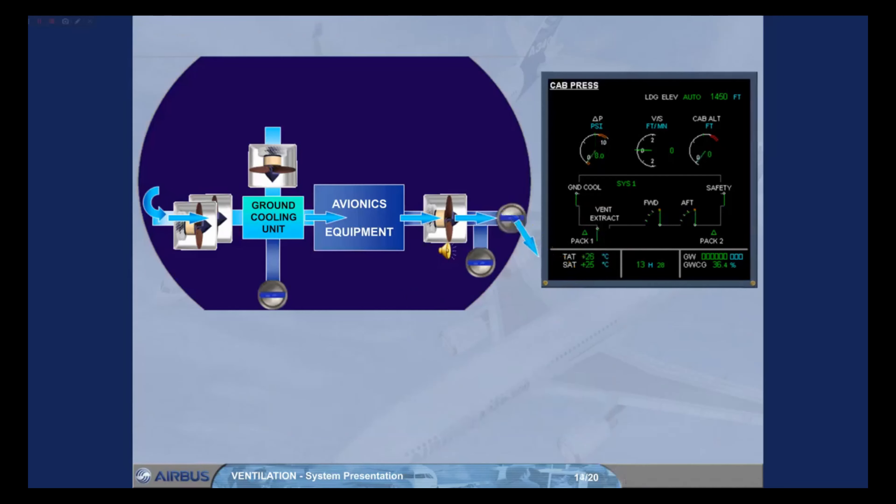The avionics equipment ventilation controller, AEVC, controls the avionics ventilation system and sends opening and closing signals to the overboard, underfloor, extract valves, and the ground cooling valve.